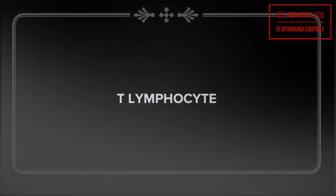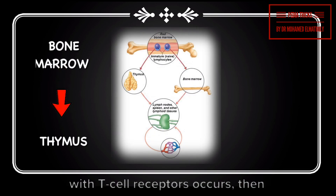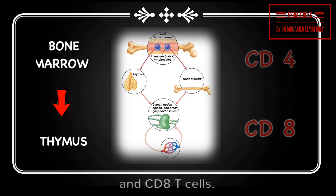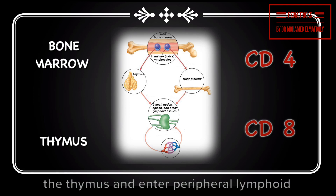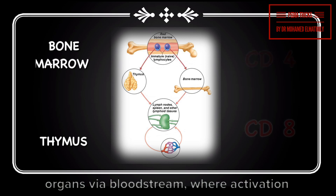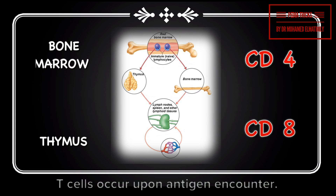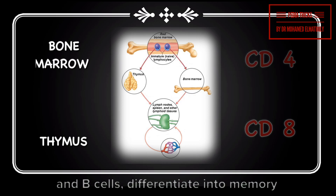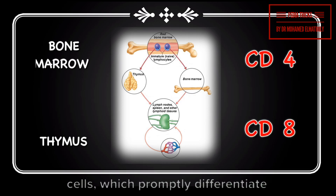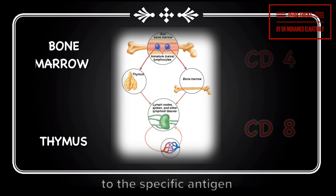T lymphocyte: T cell precursors migrate from the bone marrow to the thymus where combination with T cell receptors occurs, then T cell precursors develop into CD4 and CD8 T cells. Both CD4 and CD8 then emigrate from the thymus and enter peripheral lymphoid organs via the bloodstream, where activation and further differentiation into effector T cells occur upon antigen encounter. Some antigen-activated T cells and B cells differentiate into memory cells, which promptly differentiate into effector cells upon re-exposure to the specific antigen.